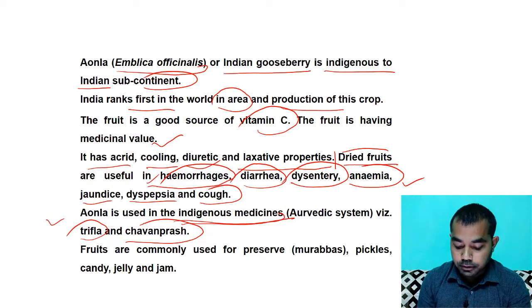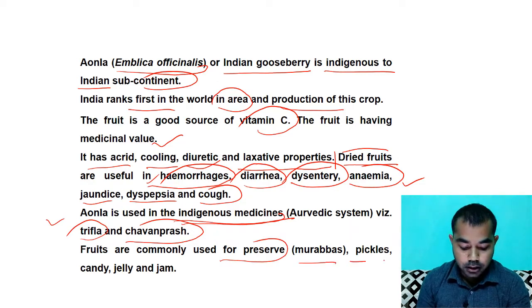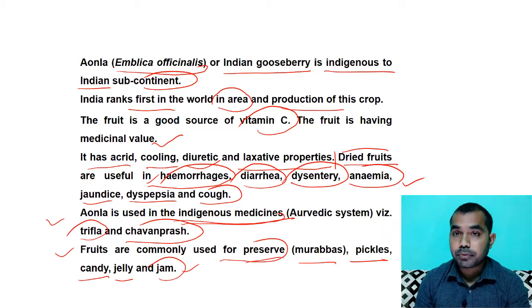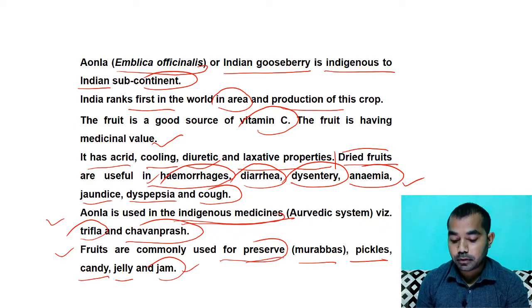Aula is used in indigenous medicine in the form of Triphala and Chyawanprash, which have been used for a long time. Fruits are commonly used for preserves as murabba, pickles, candy, jelly, and jam. So in these different forms you can preserve Aula.